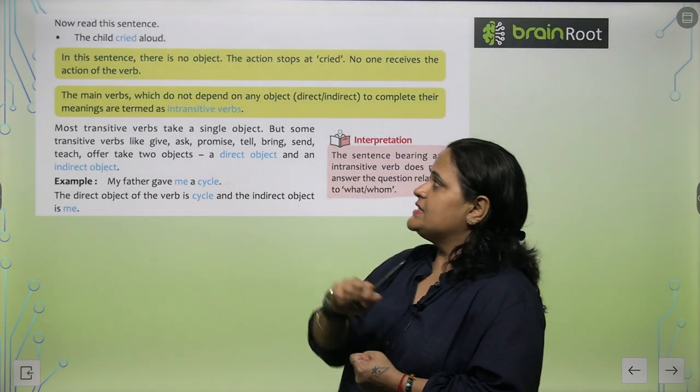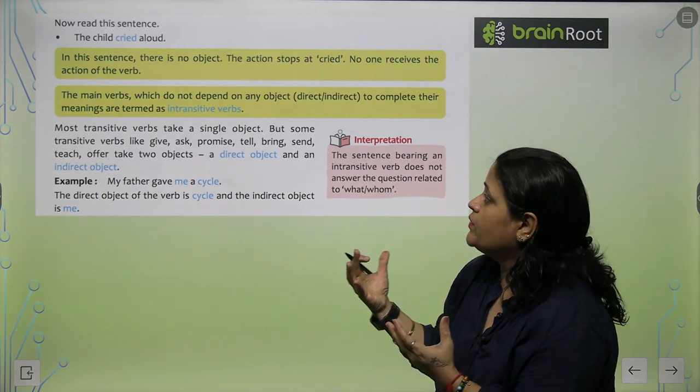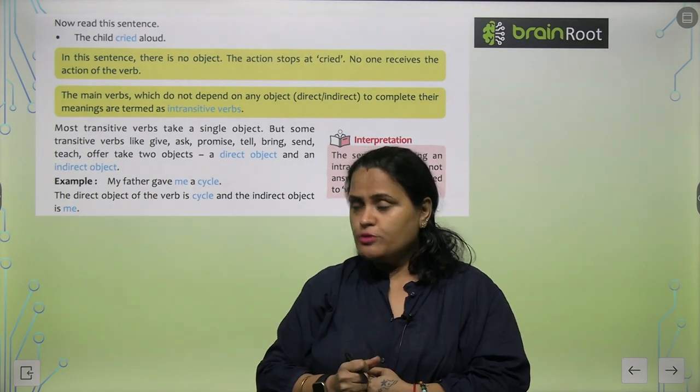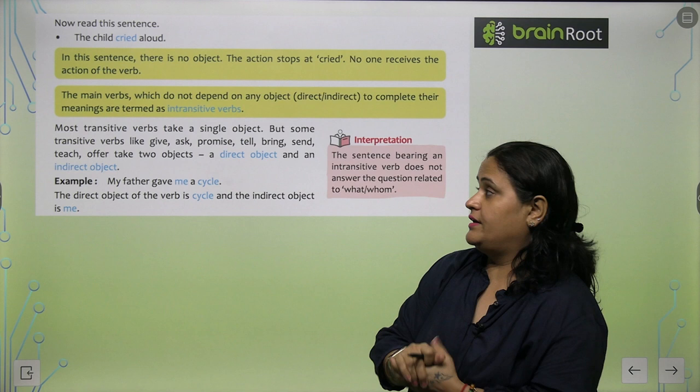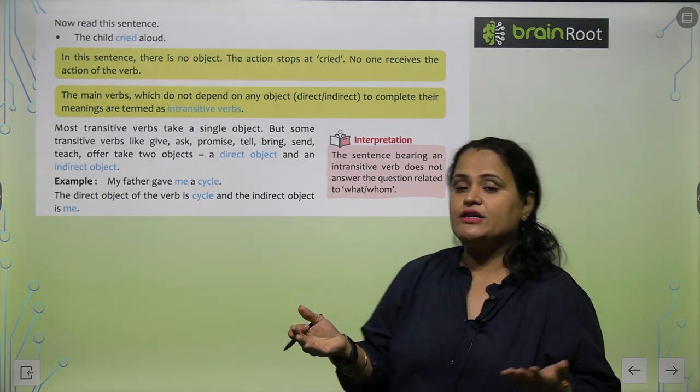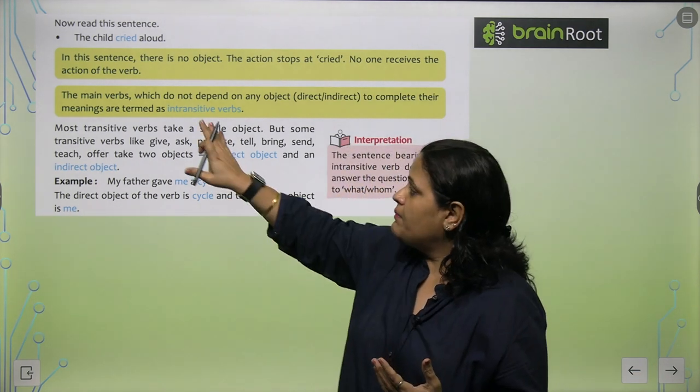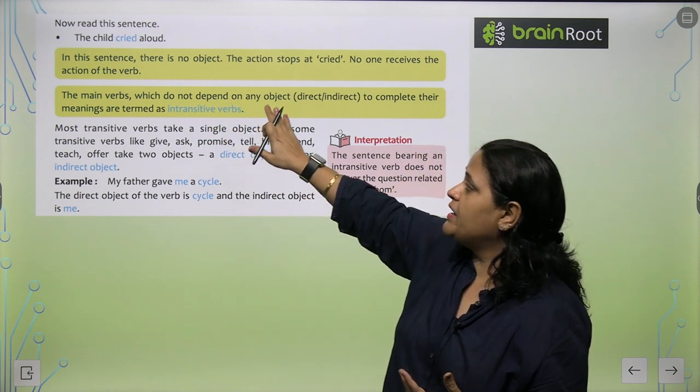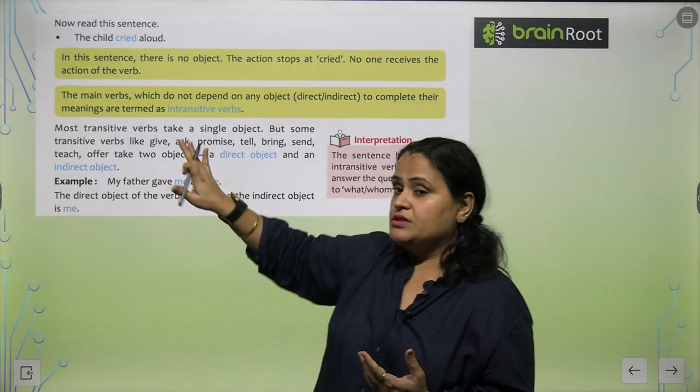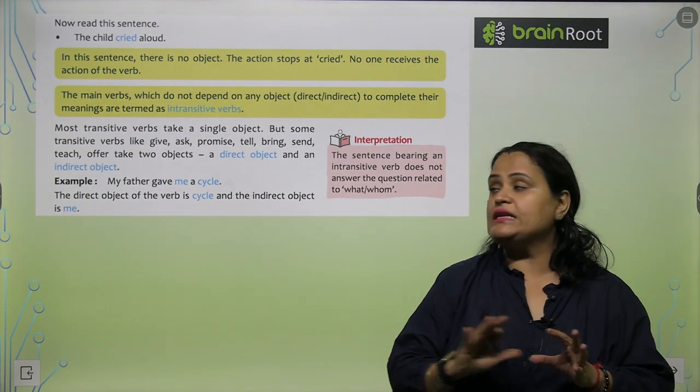Now read this sentence: The child cried aloud. In this sentence there is no object. The action stopped as cried. No one receives the action of the verb. The main verbs which do not depend on any object to complete their meaning are termed as intransitive verbs.